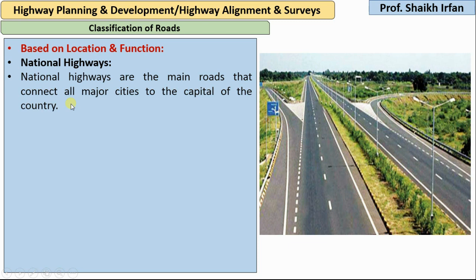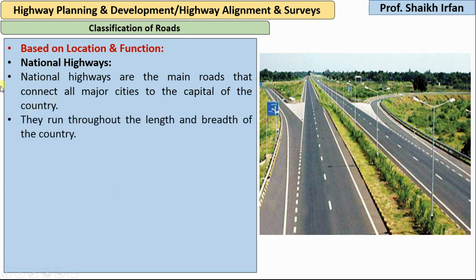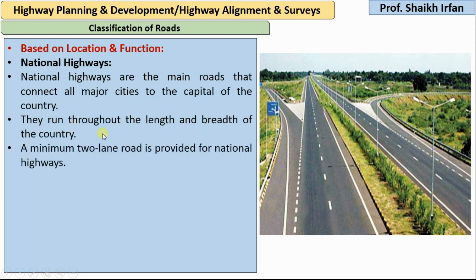Mumbai and Pune are getting connected with a road to Delhi, so that road can be called a national highway, and they run throughout the length and breadth of the country. The minimum two-lane road is provided for national highways.